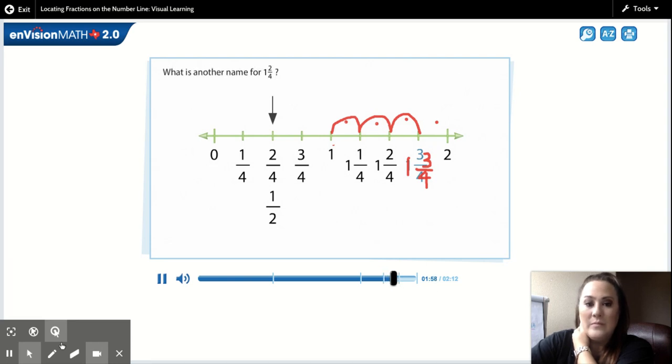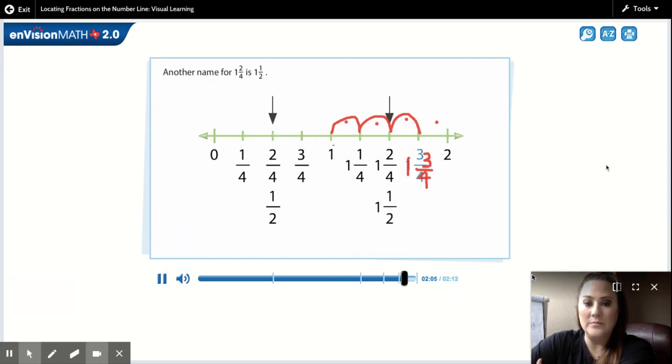What is another name for one and two-fourths? Okay, if one-half is equal to two-fourths, then what do you think a name for one and two-fourths would be? It would be one and one-half. Another name for one and two-fourths is one and one-half.